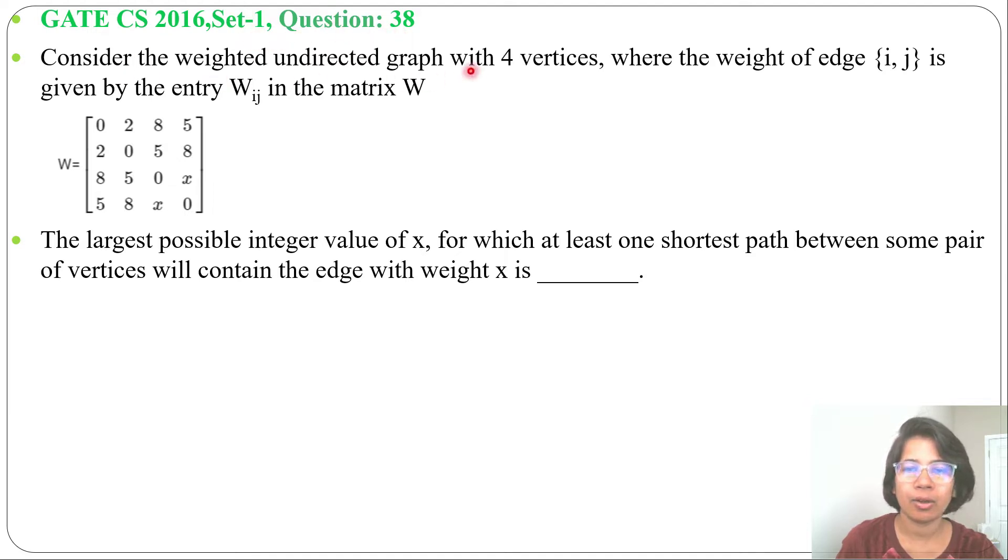Consider the weighted, undirected graph with 4 vertices where the weight of the edge ij is given by the entry wij in the matrix w. This is the weighted matrix.